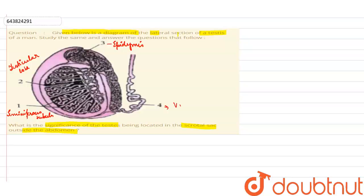And the fourth one represents vasa deferens.